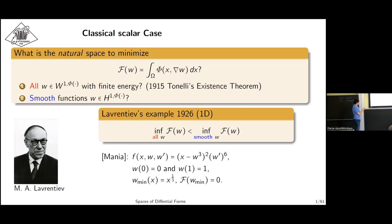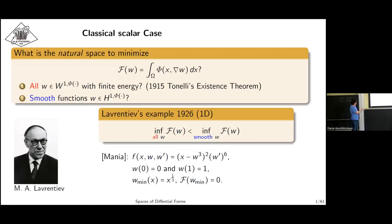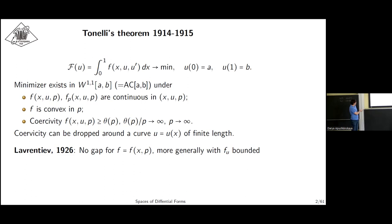This example was simplified by Mania. If you consider the integral from zero to one, it is just zero, and one can show that for C1 functions with these boundary values, this is strictly greater than some fixed positive number. Here I write the classical Tonelli theorem, an existence theorem in the space of absolutely continuous functions which assume prescribed boundary values. Lavrentiev also showed that if the integral is independent of the function itself, then there is no gap.